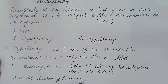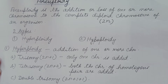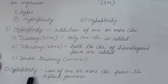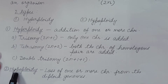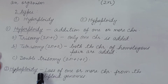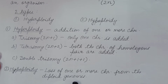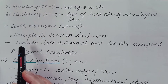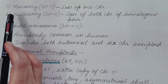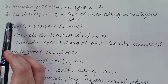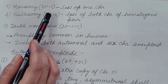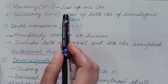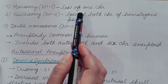The second type is hypoploidy. As the name suggests, hypo means less, so here there is loss of one or more chromosomes from the diploid genome. Depending upon the number of chromosomes lost, it is of the following types. Monosomy is written as 2n−1, when there is loss of one chromosome from the complete diploid set.